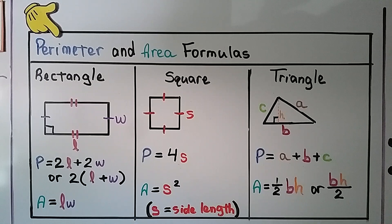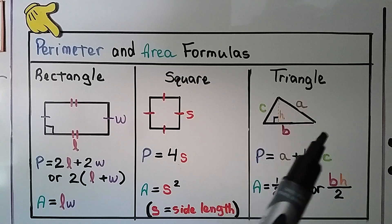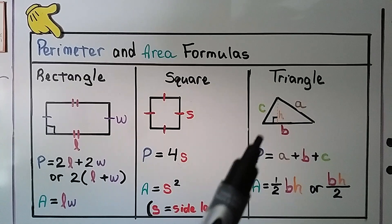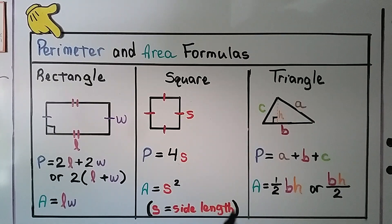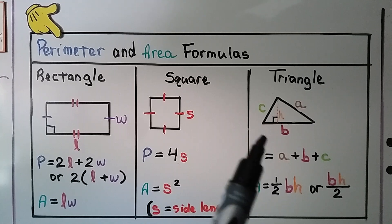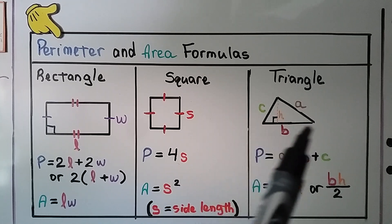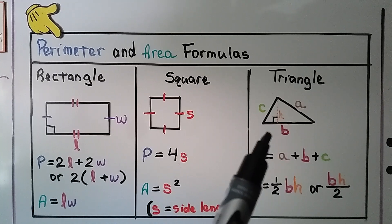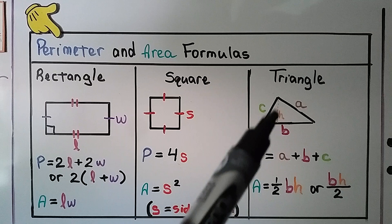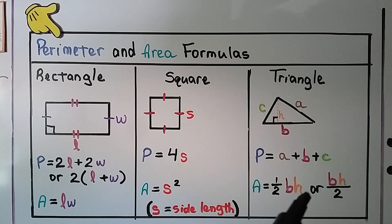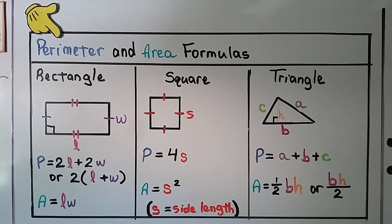For a triangle, the perimeter is the sum of the measures of its sides — a plus b plus c. For the area, we take half of the base and multiply it by the height. We could also do base times height divided by 2, and that gives us the area.